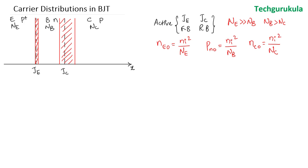Let me show the equilibrium minority carrier concentrations in this figure. Here n_C0 is the highest and p_N0 is in between. On the x-axis, I take the origin as the reference, W is the effective base width, and X_C is the point at the collector junction edge.